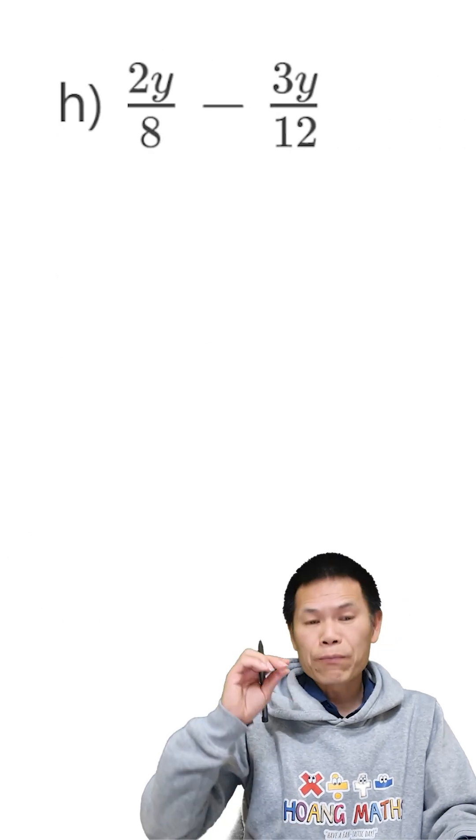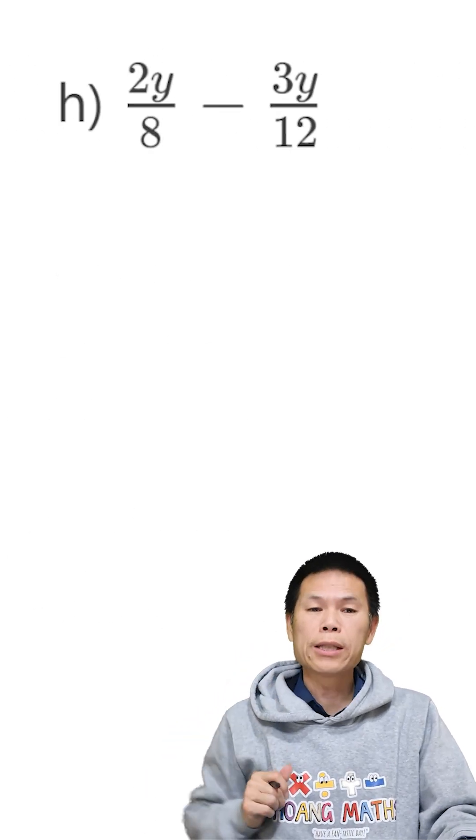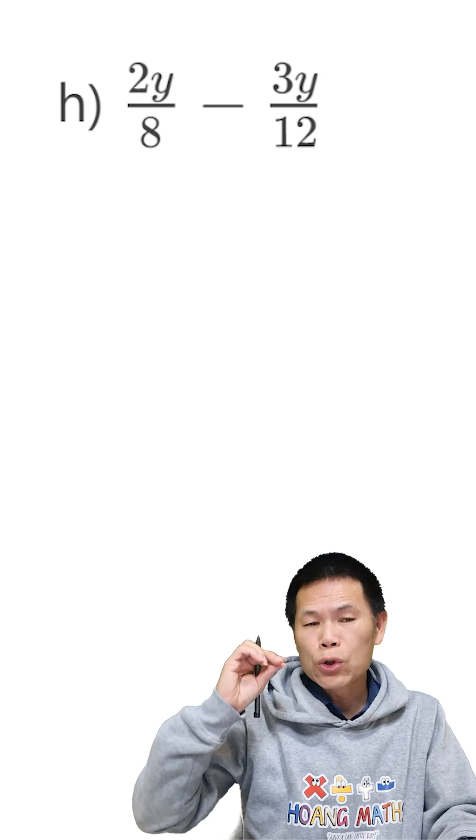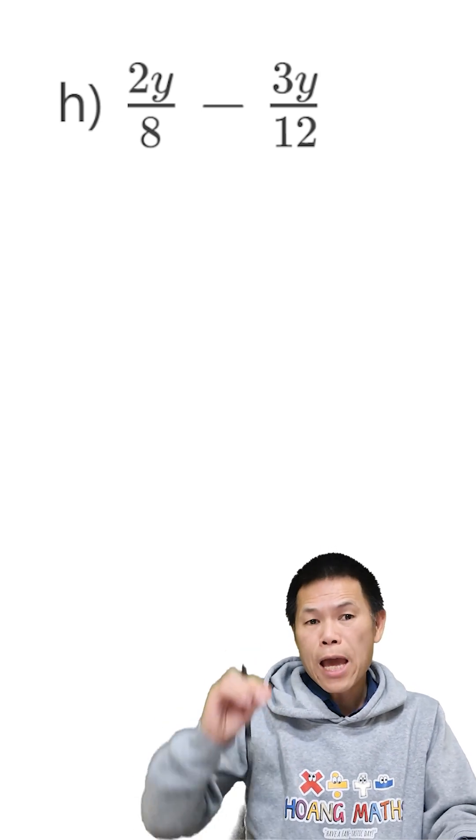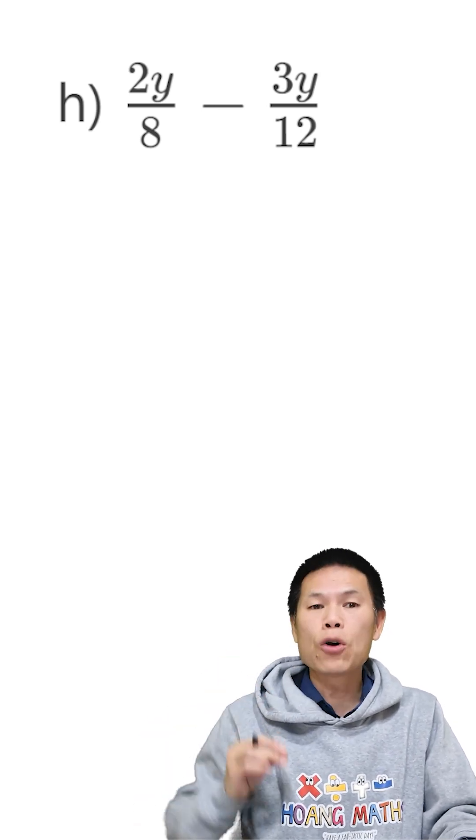Now, part H. We have 8 and 12 as the denominators. So therefore, 24 is the lowest common denominator.